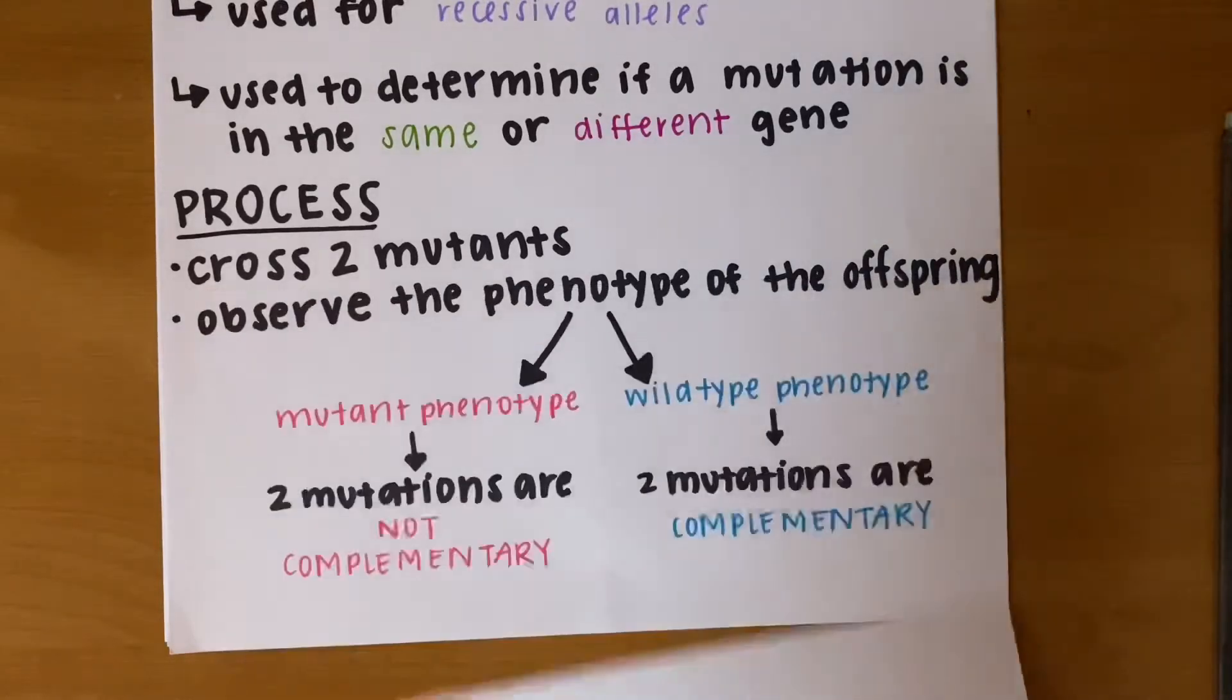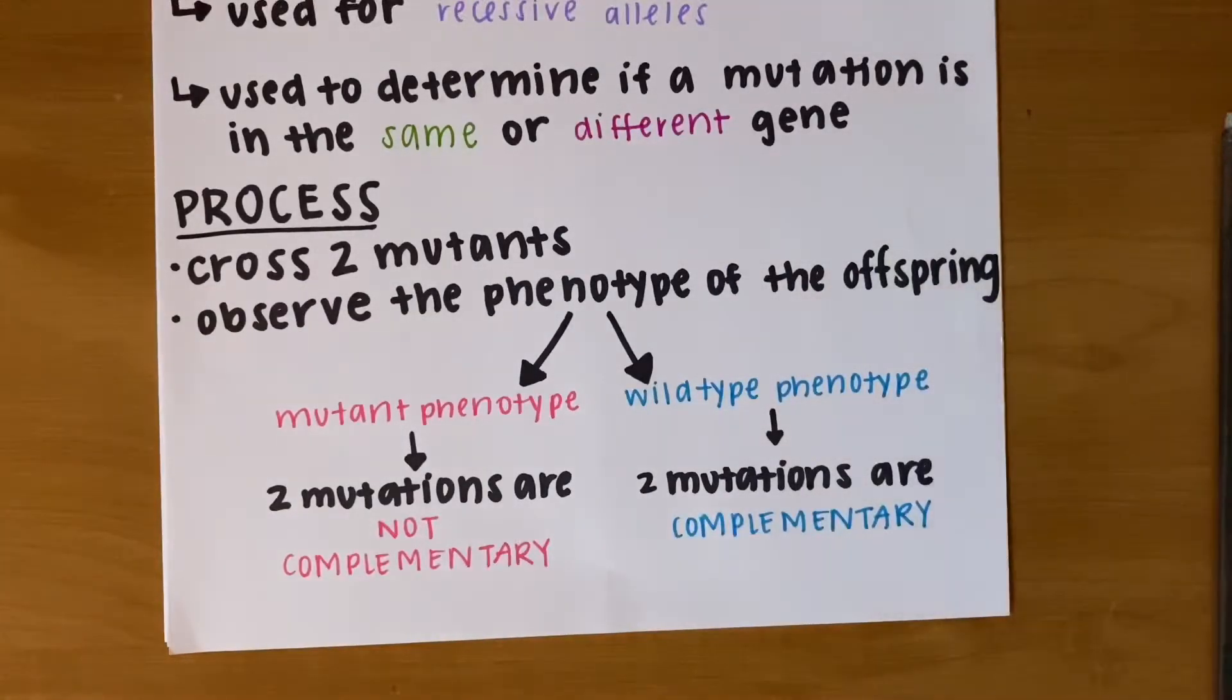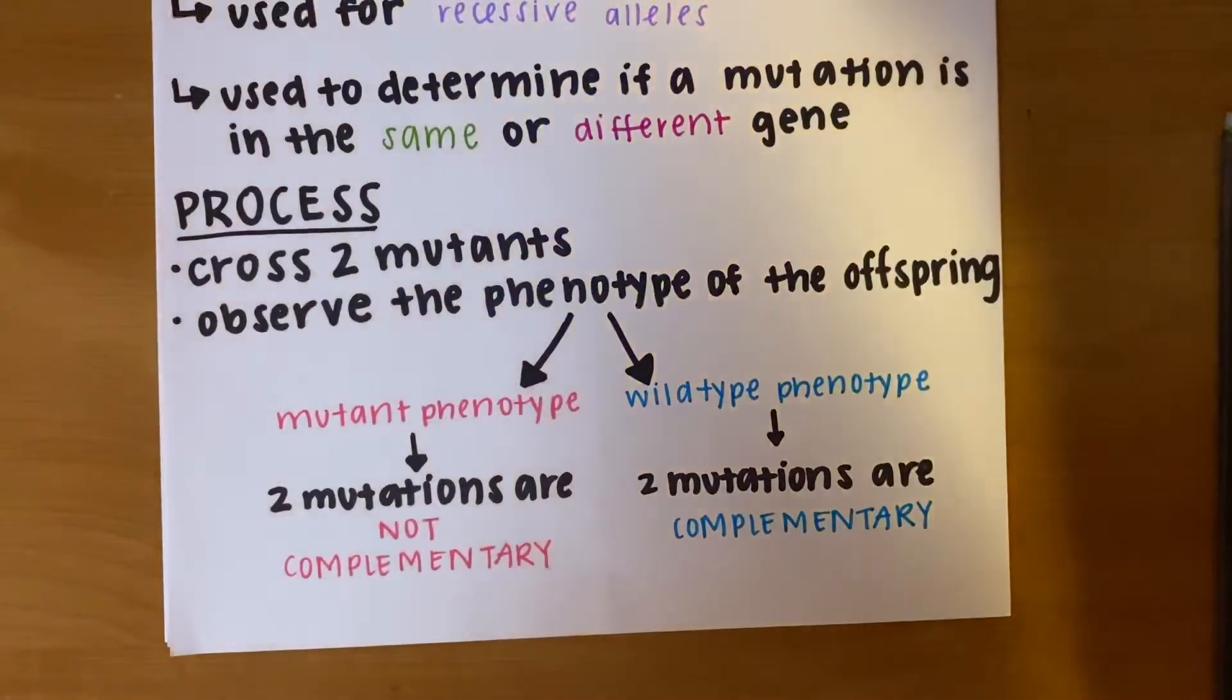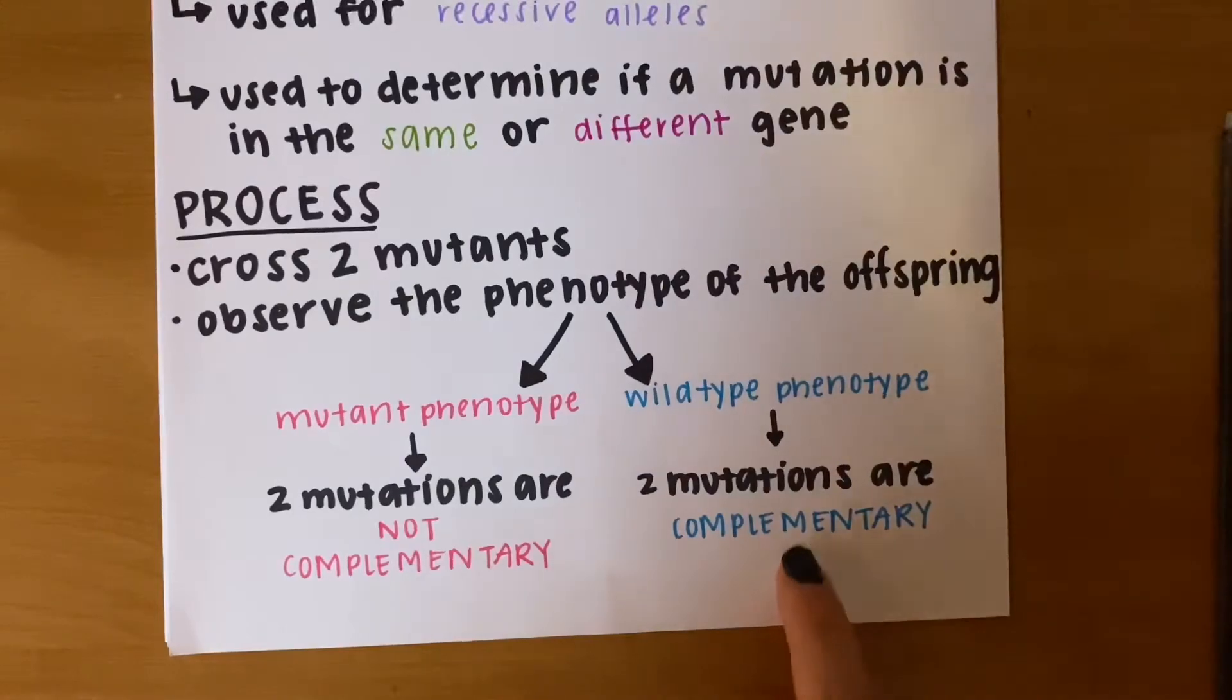If the offspring of the cross exhibit a mutant phenotype, we know those mutations are not complementary because they were in the same gene. If the offspring recover the wild type phenotype, then we say that the two mutations are complementary in different genes.